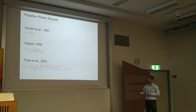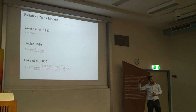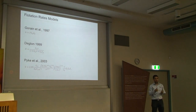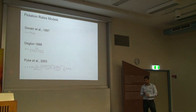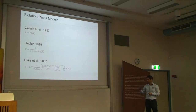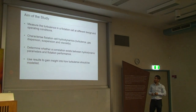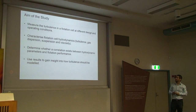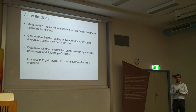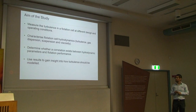In terms of modeling, the existing models include air, energy dissipation, and other features — but there is no turbulence yet. We need to work on this. The aim of the study is to: measure turbulence in a flotation cell at different design and operating conditions; characterize flotation cell hydrodynamics; measure turbulence, gas dispersion, suspension, and viscosity; determine whether a correlation exists between hydrodynamic parameters and flotation performance; and use results to gain insights into how turbulent the cell should be.